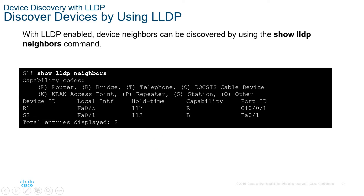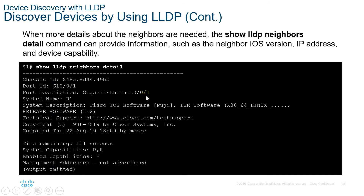To discover devices using LLDP, use 'show lldp neighbors' — similar to 'show cdp neighbors'. The output shows that connected to your switch is a router via Fa0/5, and Switch 2 via Fa0/1 with capability 'Bridge'. For more detail, including IOS version, IP address, and device capability, use 'show lldp neighbors detail'.